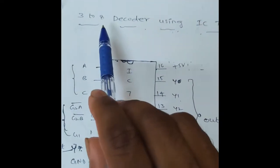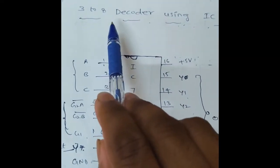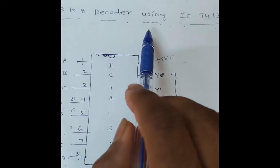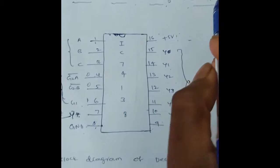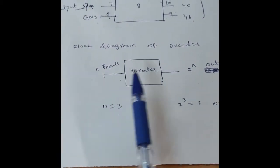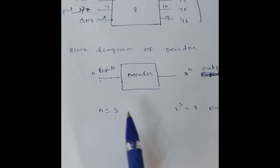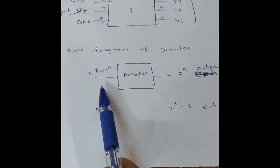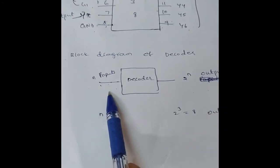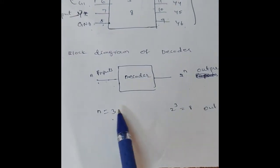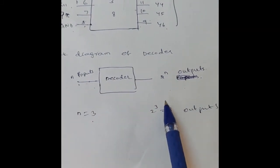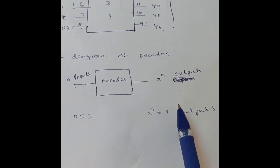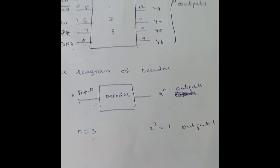Hi students, today's experiment is the 3-to-8 decoder using IC74138. This is the block diagram of a decoder — it has n inputs and 2-to-the-power-n outputs. If n is equal to 3, the outputs are 2 to the power 3, that is 8 outputs.